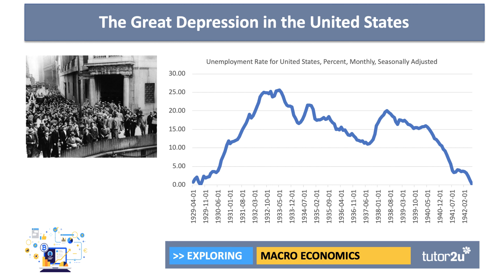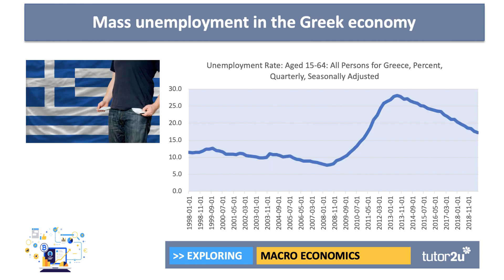That rate then fell but remained above 15% essentially until the war. A more modern-day example would be the economic slump associated with Greece in the aftermath of the global economic crisis from 2007 onwards. As you can see in the chart, unemployment surged to more than 25% of the labour force, and youth unemployment at one point reached nearly 60% of people aged between 18 and 24 years old.